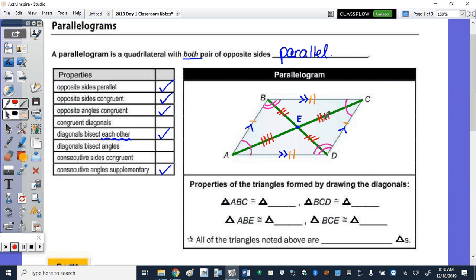And then last, our consecutive angles are supplementary. So what that's going to mean is the measure of angle A, for example, plus the measure of angle B is 180 degrees. And that could be also angles B and C, those are consecutive, C and D, and then A and D.